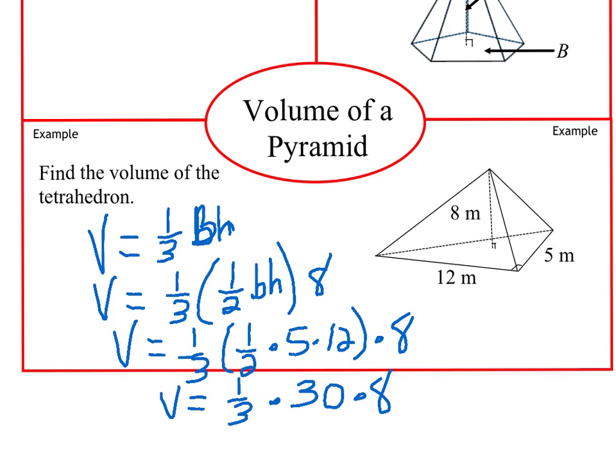So one-third times 30 would be 10. 10 times 8 would give us 80. So the volume for this triangular pyramid would be 80 meters cubed.